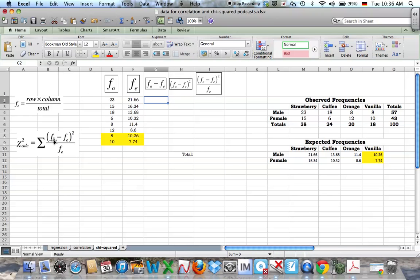So first of all it says, observe frequency minus expected frequency. So I've just got that column here. And I want, there's my observed minus my expected, done. Then quickly click on it, get the black cross, remember, drag down.